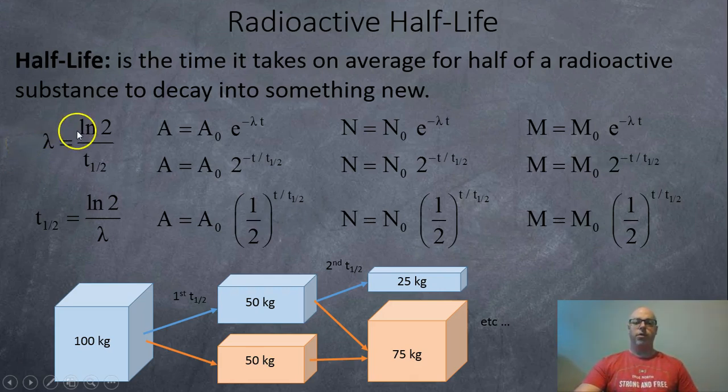All you have to do is take the natural logarithm of 2 and divide by the half-life. So if the half-life was 10,000 years it would be ln 2 divided by 10,000 years. If you know the decay constant and you want to find out what the half-life is, you just take ln 2 and divide by the decay constant.